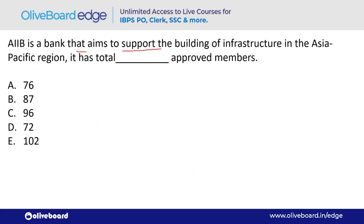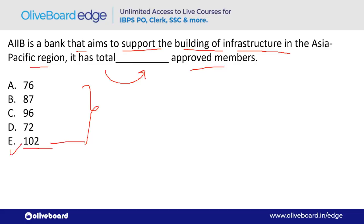AIIB is a bank that aims to support the building of infrastructure in the Asia-Pacific region. How many total approved members does AIIB have? The total approved members are 102 — option E. AIIB stands for Asian Infrastructure Investment Bank; its headquarter is in Beijing, China.